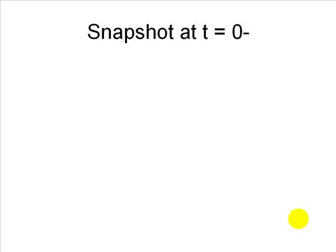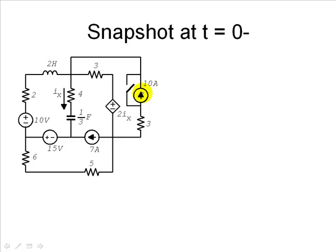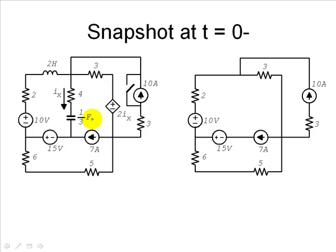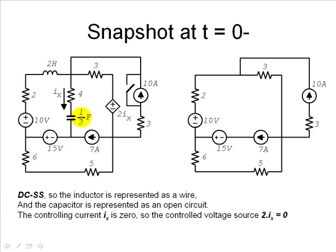Snapshot at zero minus — right before we move the switch. The switch is still open. Being that the circuit has been like that for a long time, it's in steady state. We represent the capacitor as an open circuit, so there is no current in that branch and we eliminate it completely. We represent the inductor as a short circuit. Because this current Ix is zero, this controlled voltage source whose value is 2Ix is going to have a value of zero volts, so it's represented as a wire in this particular case. This is the circuit we need to solve at t equals zero minus.